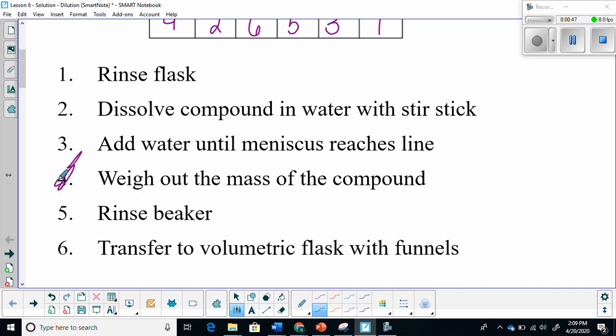Then, after you weigh that out, you want to put that mass or that compound into a beaker and dissolve it in water using a stir stick. From there, you are going to transfer that compound into a volumetric flask using a funnel. Please do not try to put it in without the funnel. Once that is done, you are then going to rinse.